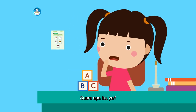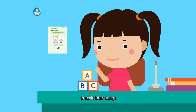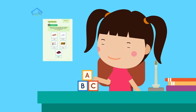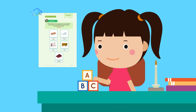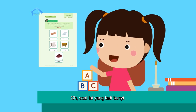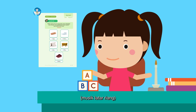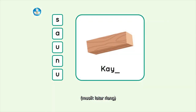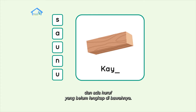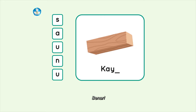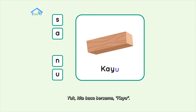Suara apa itu ya? Apa kalian mendengarnya? Soal apa? Oh, soal ini yang tadi bunyi. Kita lihat bersama yuk, teman-teman. Ada gambar kayu dan ada huruf yang belum lengkap di bawahnya. Kira-kira huruf apa ya? Benar, hurufnya U. Yuk, kita baca bersama: kayu.